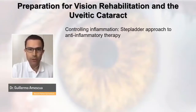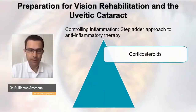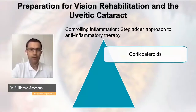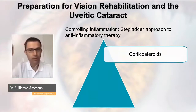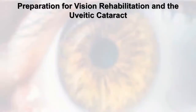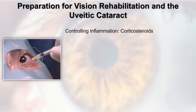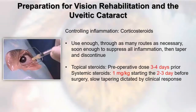The approach to controlling inflammation is a stepladder strategy. Corticosteroids are our best friends and best enemy if not used responsibly. If we only depend on steroids, we can get into trouble. We need to know what immunosuppressives are available and what biologic agents exist. We have to use corticosteroids via whatever routes needed — some patients benefit from periocular steroids because systemic steroids have contraindications such as diabetes.